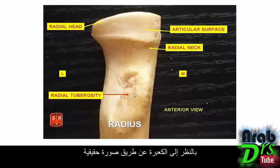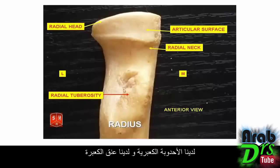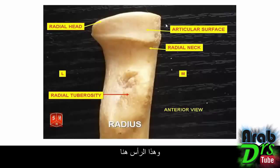Looking at a real-life image of the radius, you can see the radial tuberosity, the radial neck, and the head.